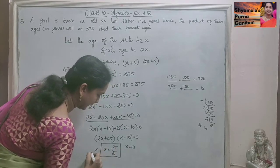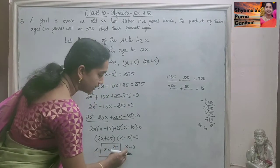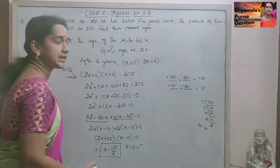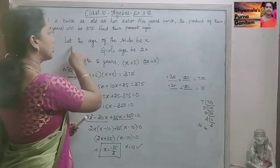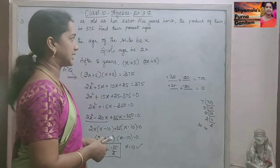So age cannot be negative and a fractional number. So X value is X equals 10. We are asked to find their present ages.